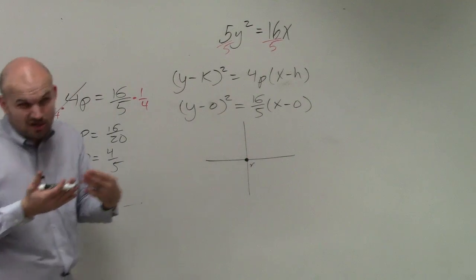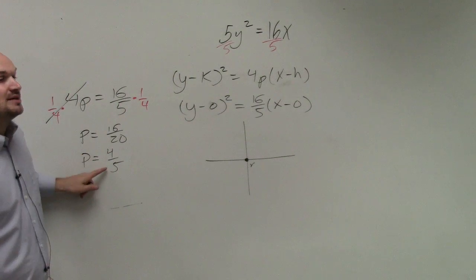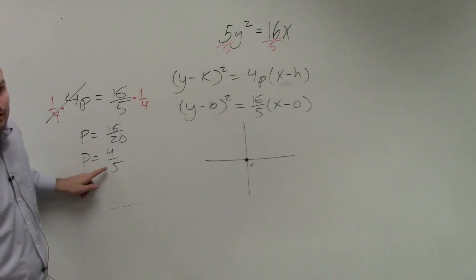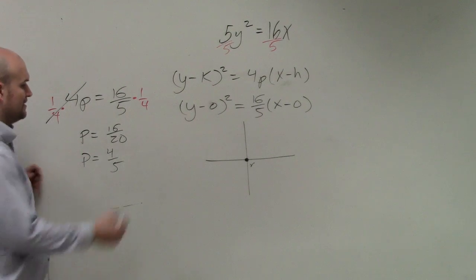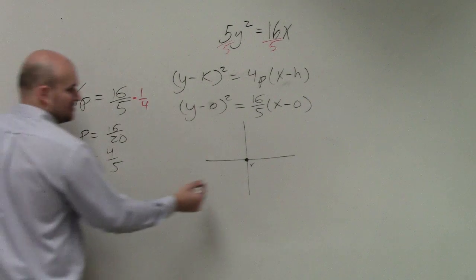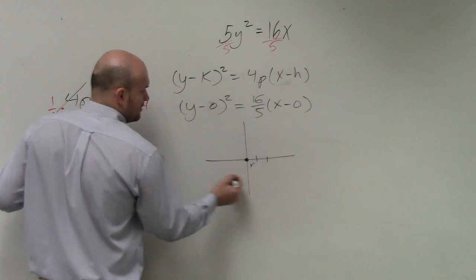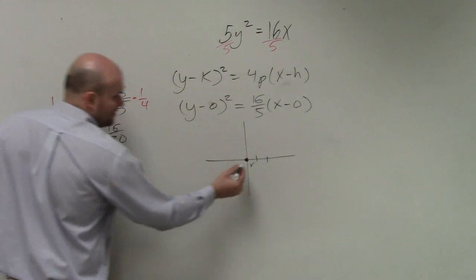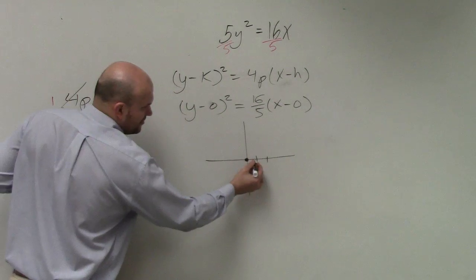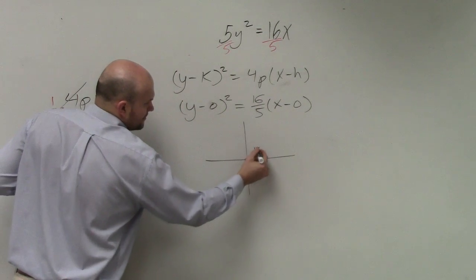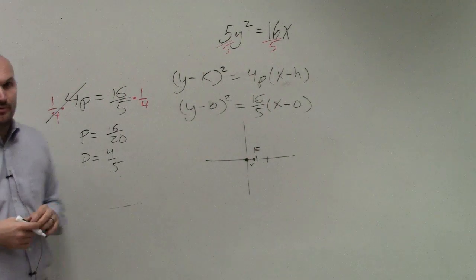To determine if it opens to the right or left, we look at the value p, because p tells us how far we need to go to our focus. So if p is 4 fifths, that means I need to go 4 fifths over to my focus. Well, 5 fifths would be 1, so it's just a little bit short. And that's my focus. Does everybody agree?